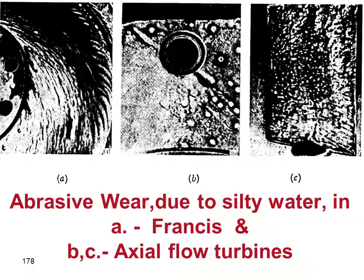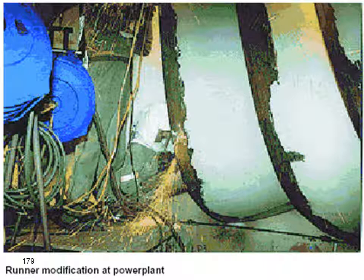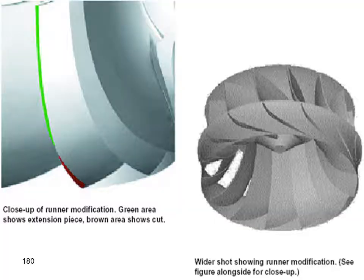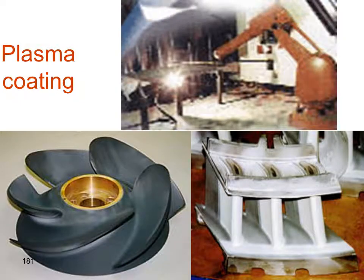After several years of operation with silty water, erosion becomes visible on turbine blades — in both axial flow and Francis turbines. After erosion from silty water, corrosion can also develop after several thousands of hours.